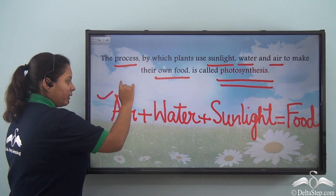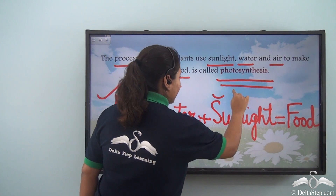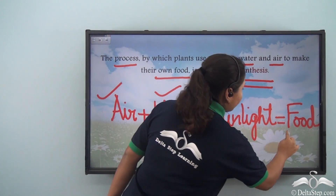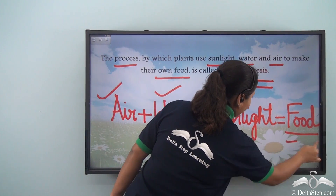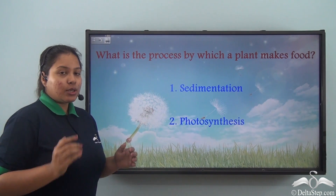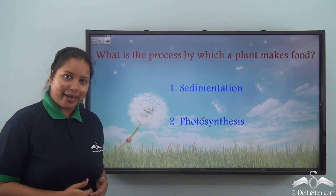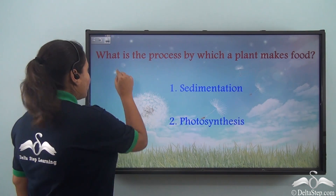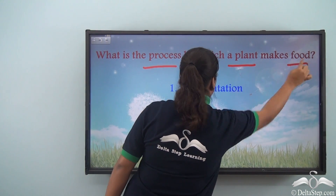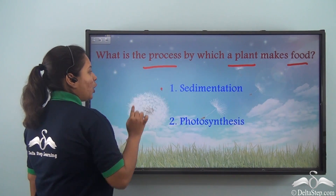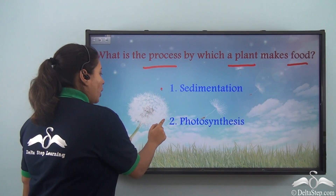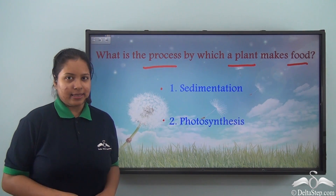Air, water, and sunlight together along with leaves make food for plants. Let me ask you a question: what is the process by which a plant makes food? Is it option 1, sedimentation, or option 2, photosynthesis?